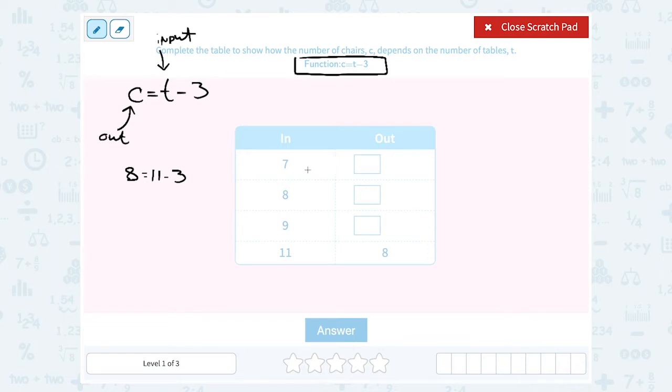Well if we put in 7, that means we're putting 7 in place of t. So we would say c is equal to, we're replacing the 7, or putting 7 where the t is, minus 3. Well 7 minus 3 gives us 4, so c, or our output, would have to be 4.